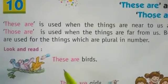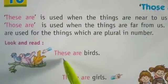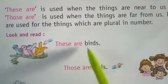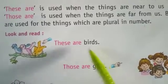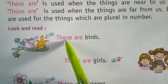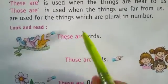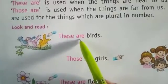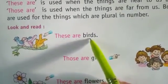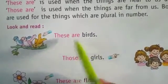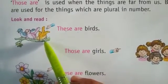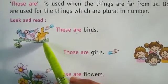Look and read. These are birds. These are birds. 'These' ka plural form — 'these' ke saath 'are' aata hai. 'Bird' ka plural form 'birds' hai. These are birds. Ye sab pakshi hain, chiriya hain.